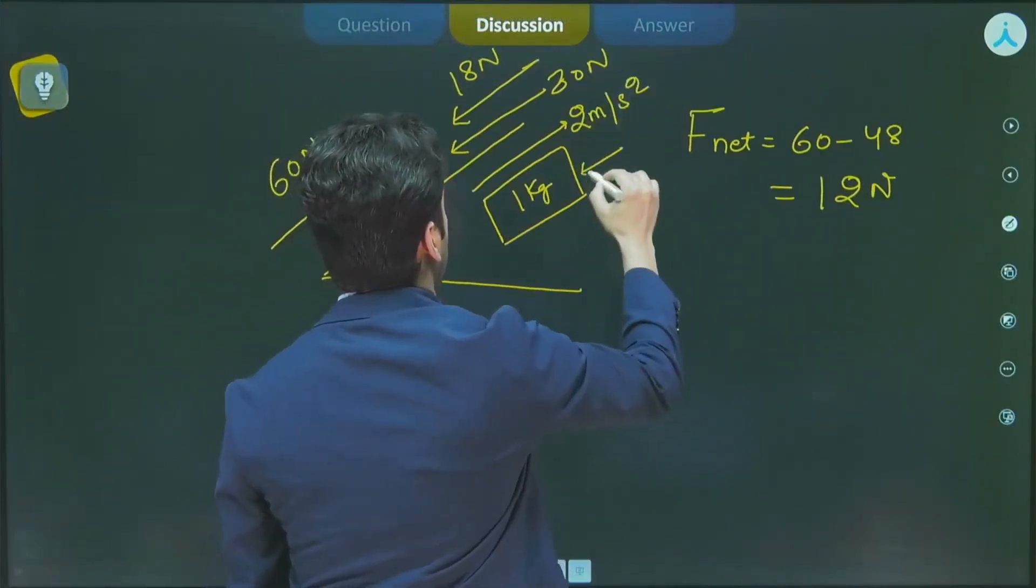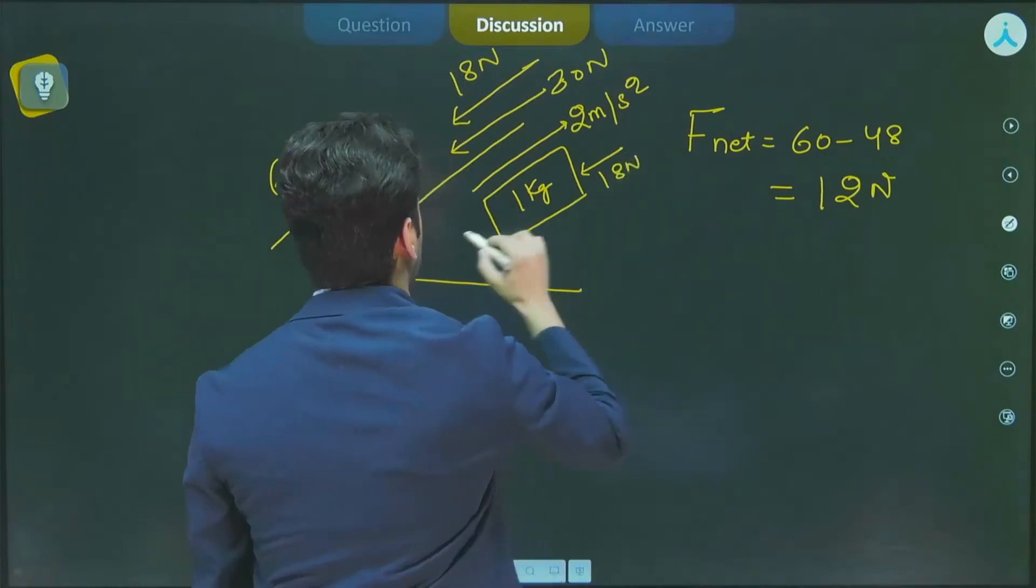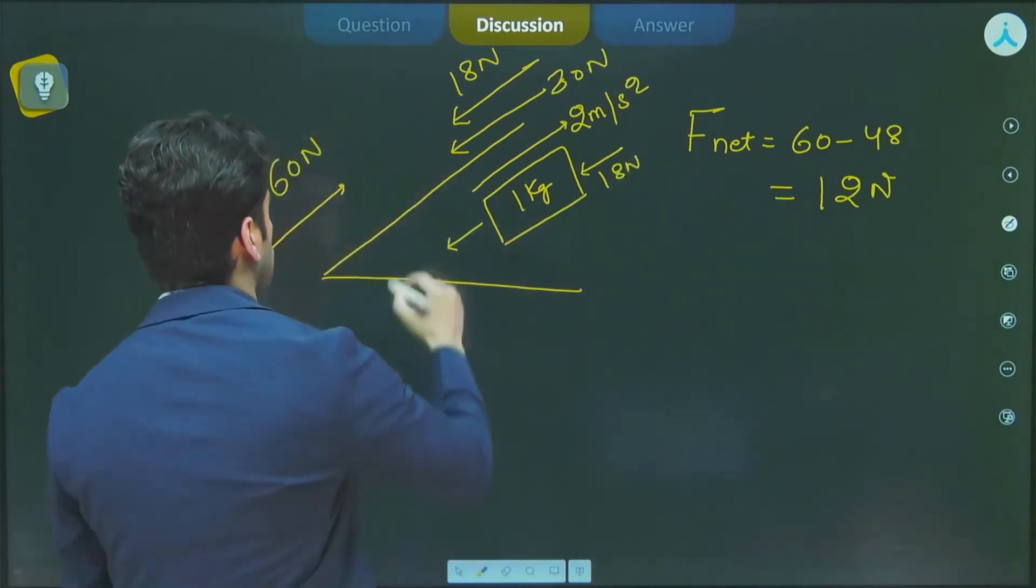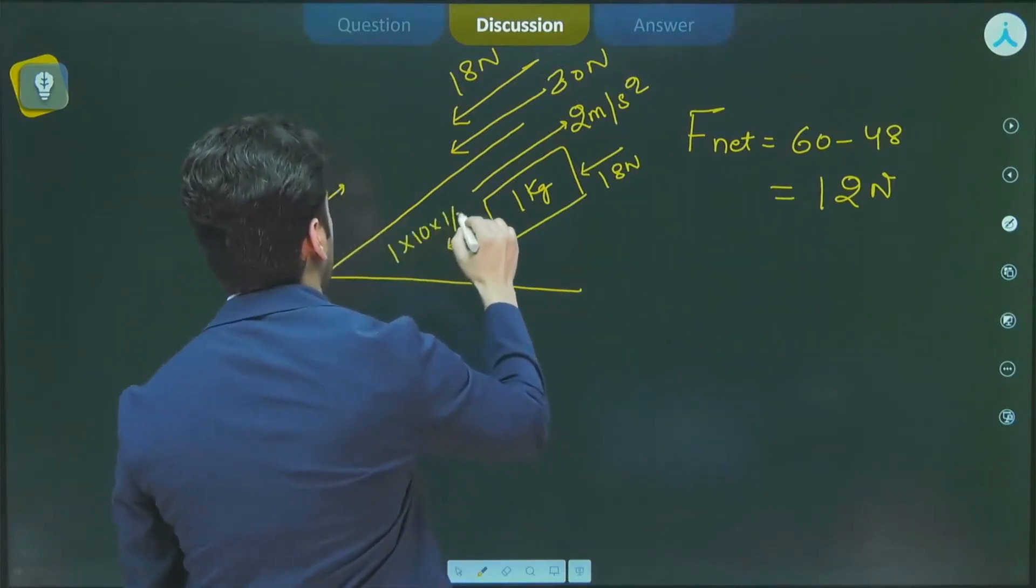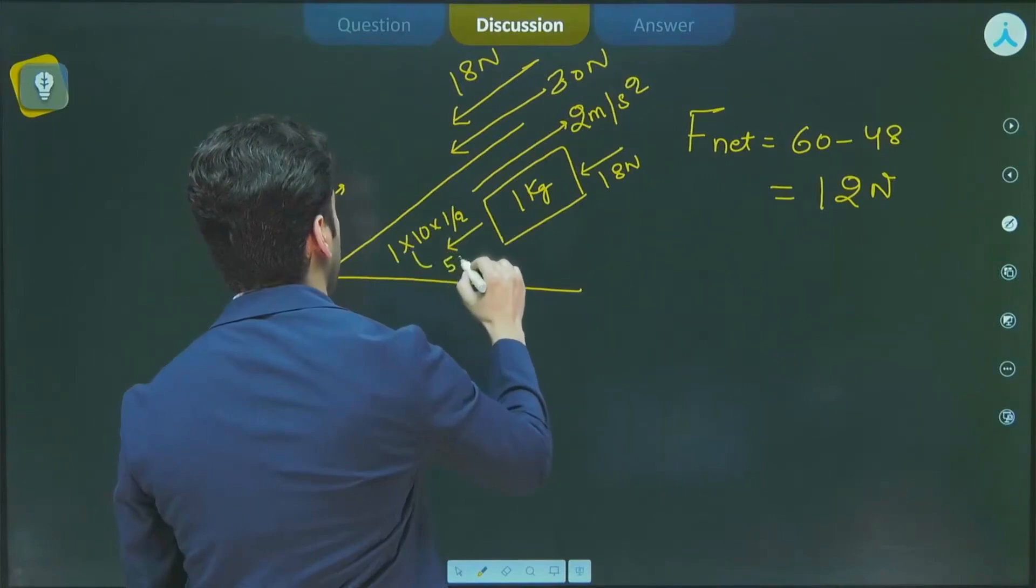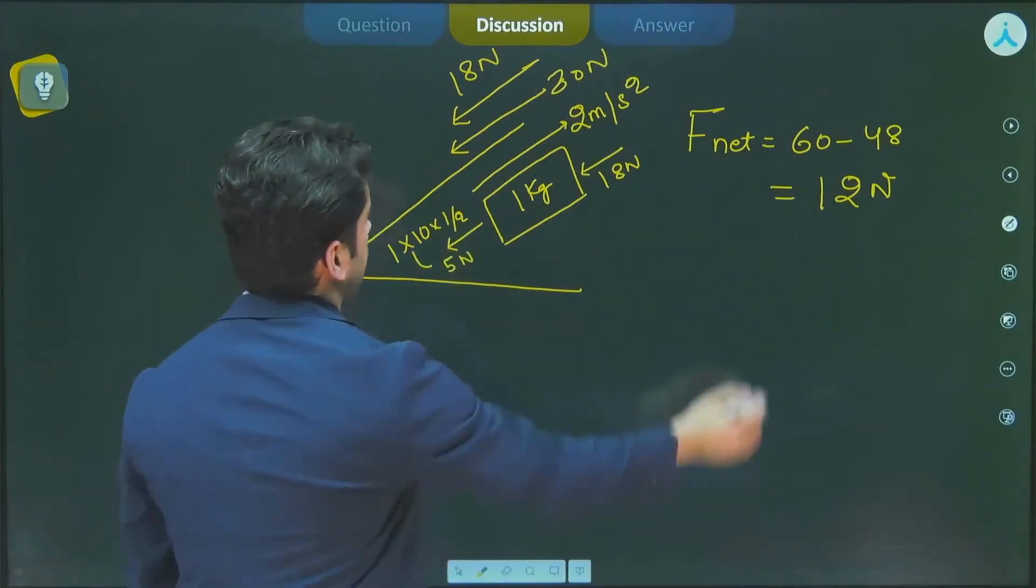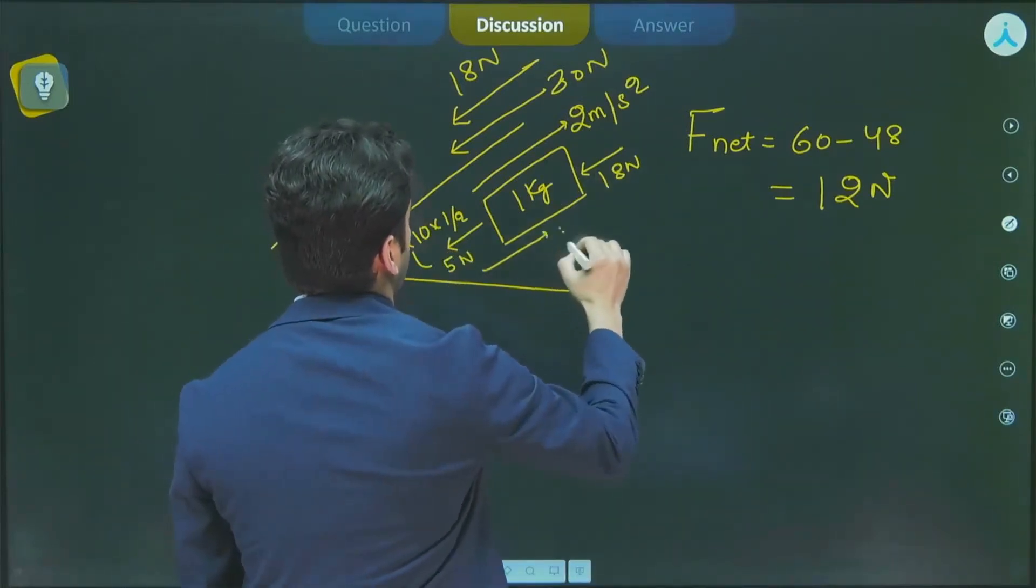18 N is applied like this. The weight component will be in this direction, that is 1 into 10 into sine theta, that is 1 by 2. So this will be equal to 5 N. And this is the contact force.